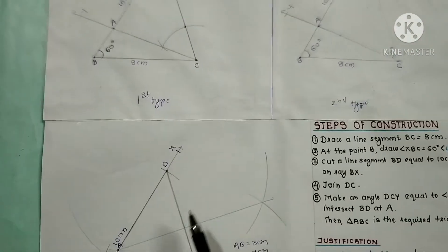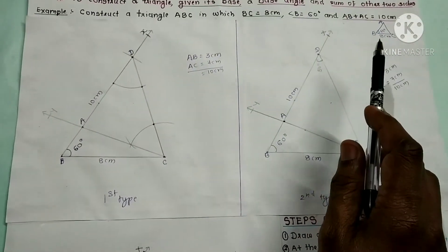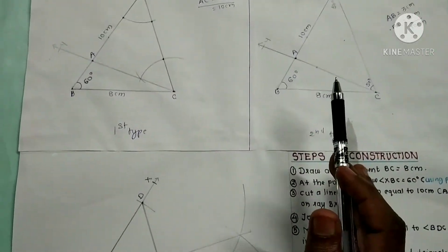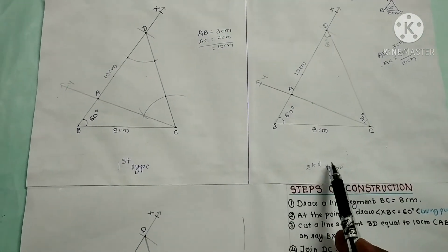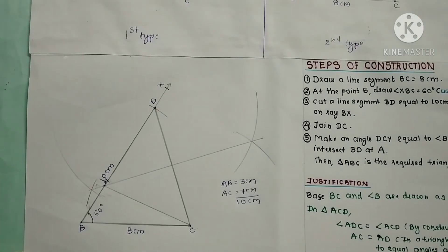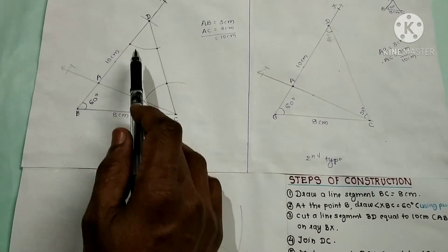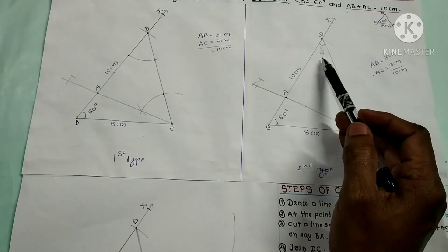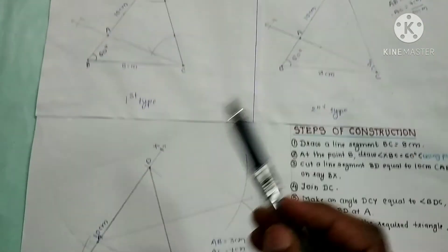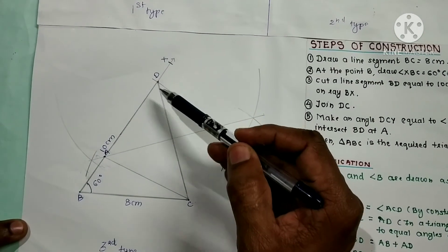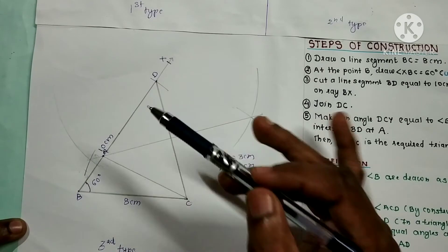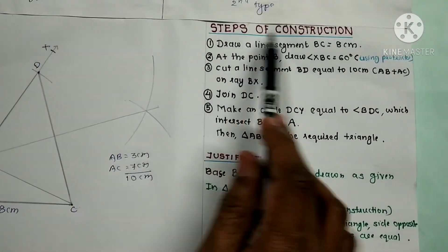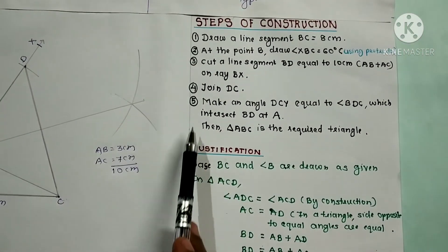These are the three types. If such type of questions are asked, you can use any one type. For the first type I used arcs. For the second type I used the protractor. For the third type I did perpendicular bisector. These are the steps of construction you can follow.